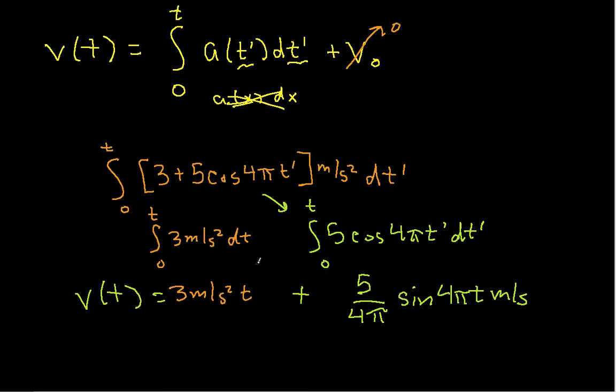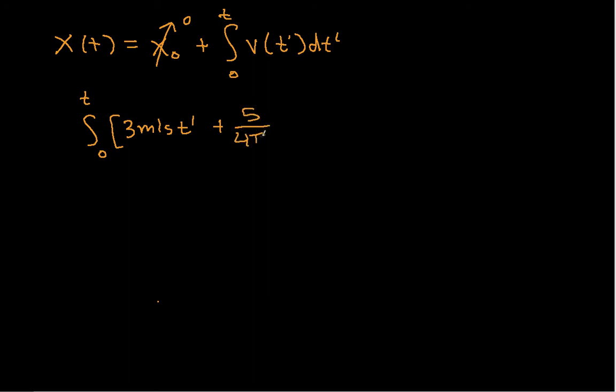Let's also now take this expression that we have for velocity and use it to find position. So we'll clean off some workspace. And the position at time T is given by the initial position plus the integral from 0 to T of the velocity of T prime D T prime. Again, this is a dummy variable of integration. Okay, x naught is 0, we know is 0. So this will be the integral from 0 to T of 3 meters per second T prime plus 5 over 4 pi sine 4 pi T prime. And this has units of meters per second. And all these are D T prime.